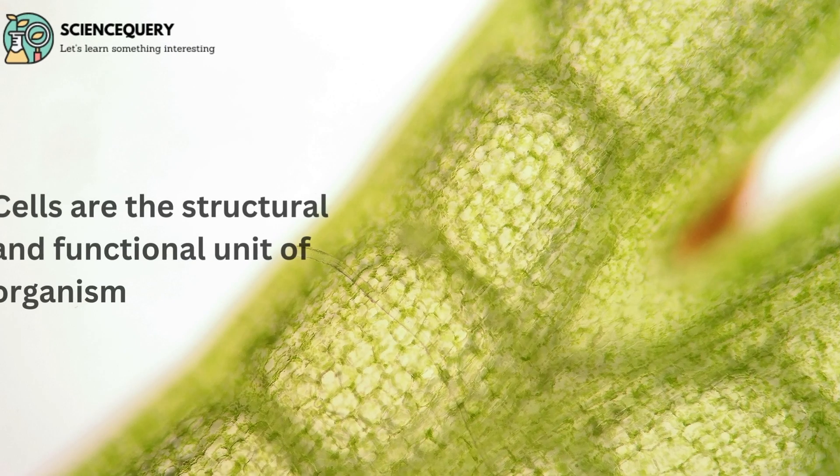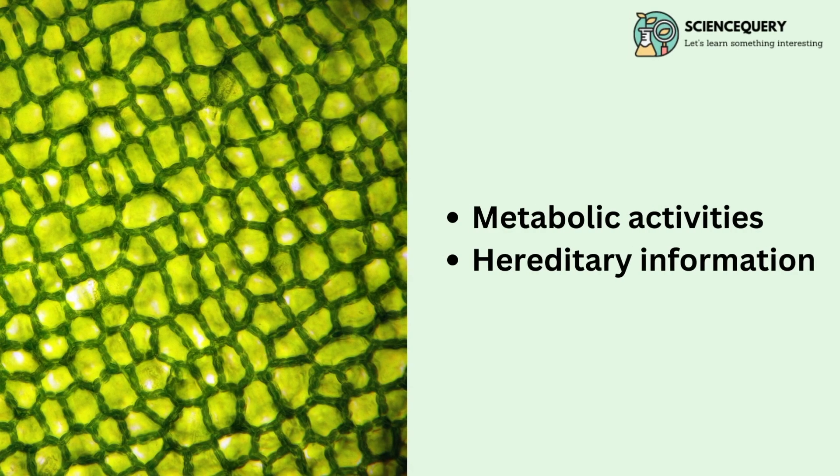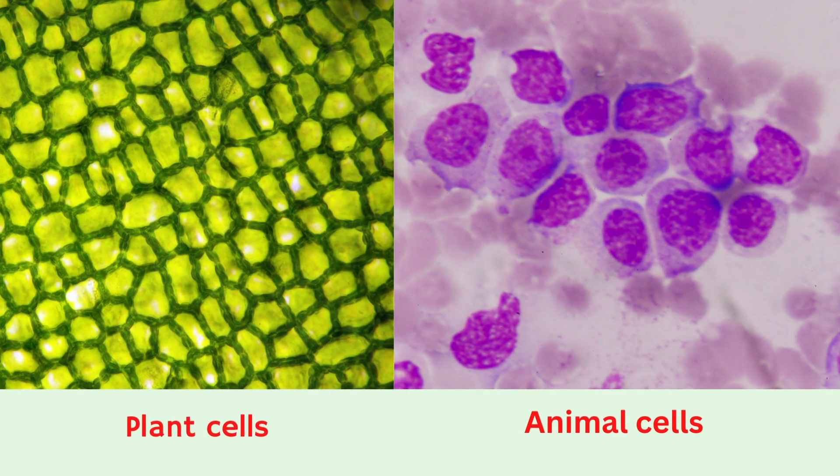Cells are the structural and functional unit of organisms. They also carry metabolic activities and hereditary information. There are two types of cells: animal and plant cell.